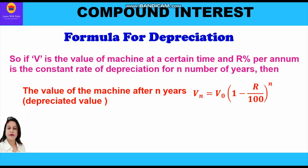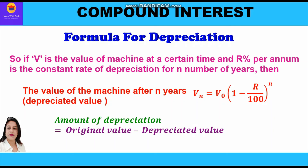If we need to find the amount of depreciation, we use the formula: original value minus depreciated value, that is V0 − Vn. Since the depreciated value is less than the original value, we subtract the depreciated value from the original value to get the amount of depreciation.